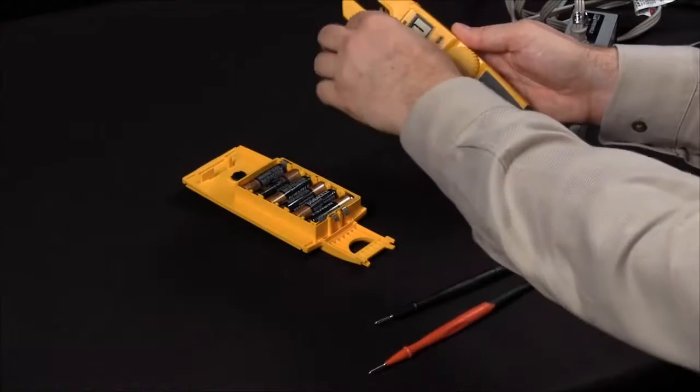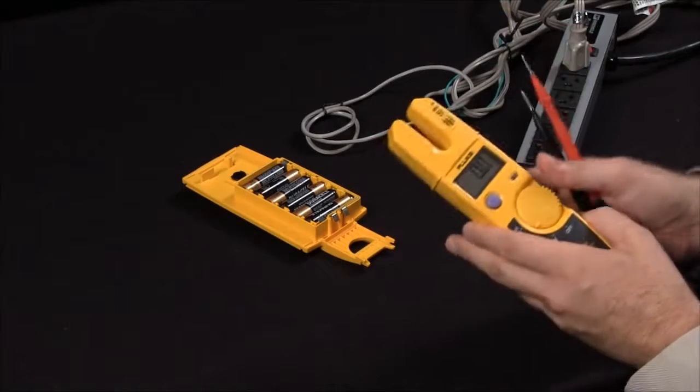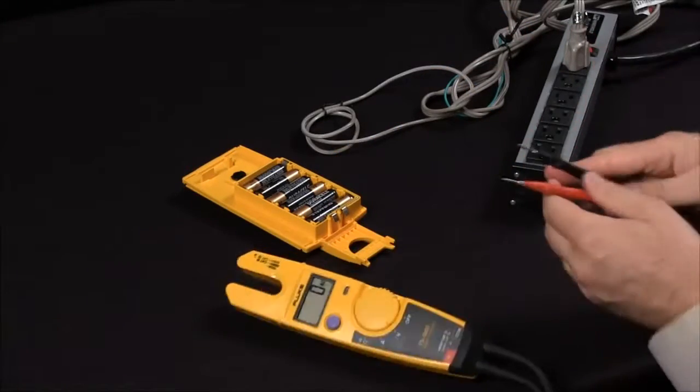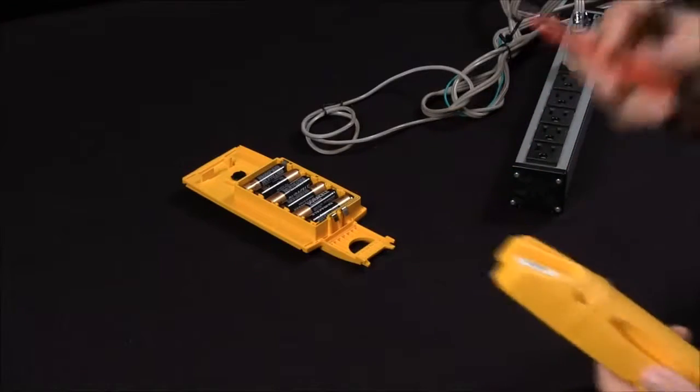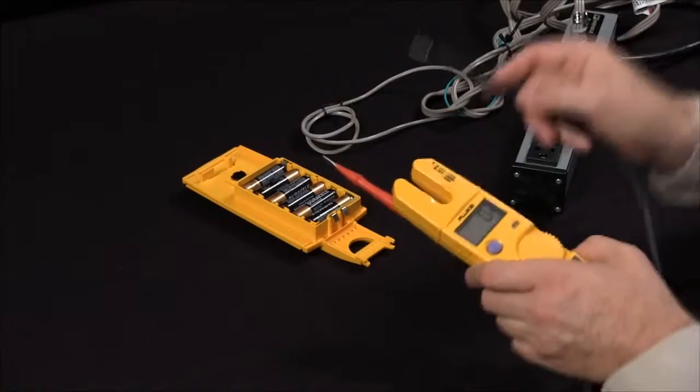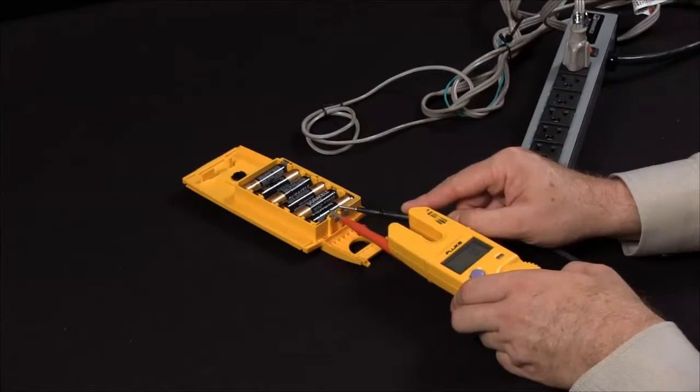To take a voltage measurement, it will auto range to either DC or AC, so move the dial position to measure DC volts. What I'm going to do is take advantage of one of the lead slots. This will allow me to take a measurement on my battery pack here, and there we see 8 volts DC.